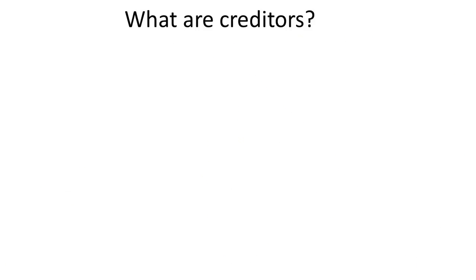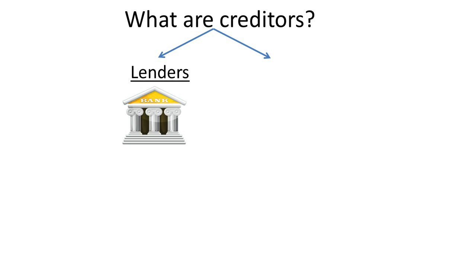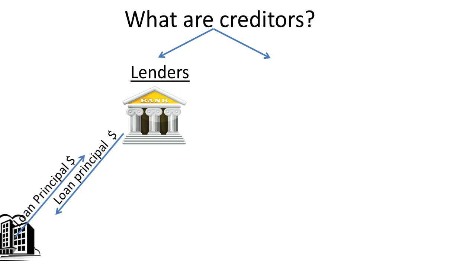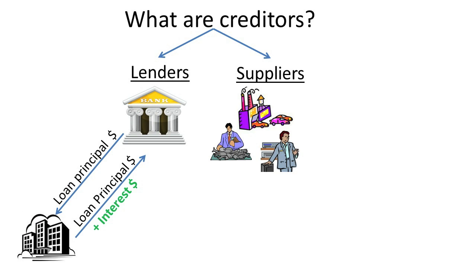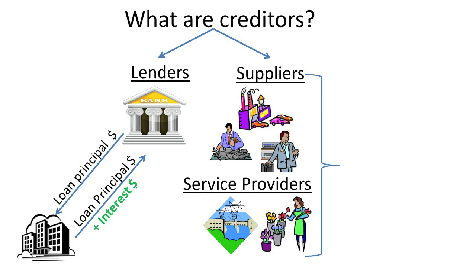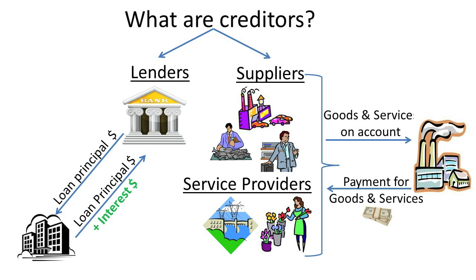What are creditors? In general, creditors can be classified into two groups: one, lenders, which are those that loan resources to borrowers and charge interest; and two, suppliers and service providers that sell goods and services on account and don't charge interest.